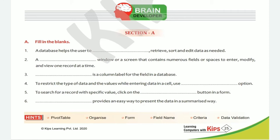Third: a dash is a column label for the field in a database. That is field name. Field name is a column label for the field in a database. Similarly, a row is a record label for the record in a database — field is in a column, same like record is in a row.